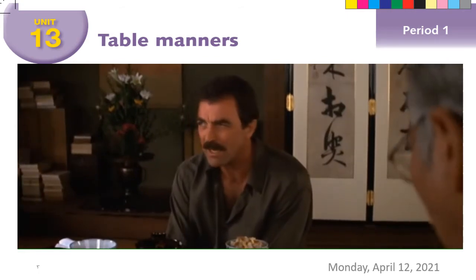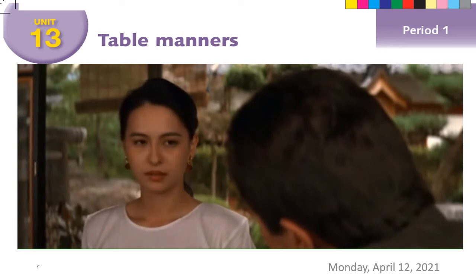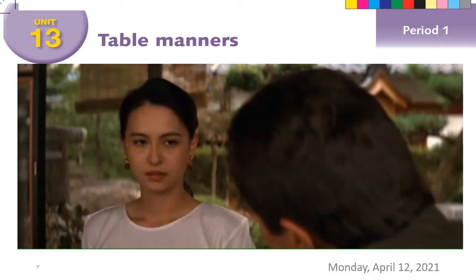What did he say? Let's try to understand this video. As you can see, there are two nations at the table — two different nations: China and America. There are Chinese people and an American person. And as you can see, there is a difference between how Chinese people eat and how the American eats.